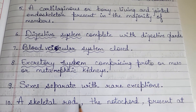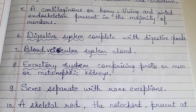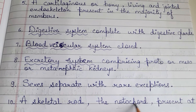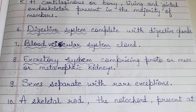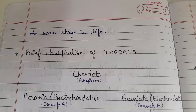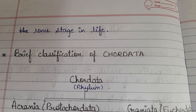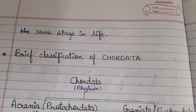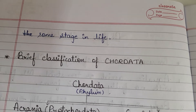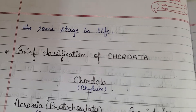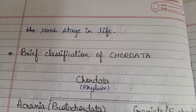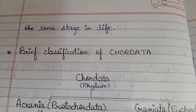A skeletal rod called the notochord is present at some stage of life — this is very important. The phylum is actually called Chordata because of the notochord. At some stage of life, all members of phylum Chordata have this skeletal rod — the notochord — present in them. So these were the main general characteristics of Chordata.